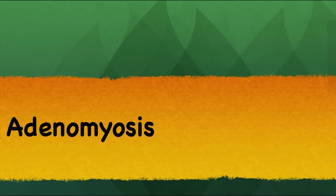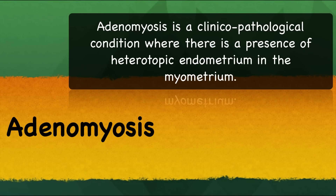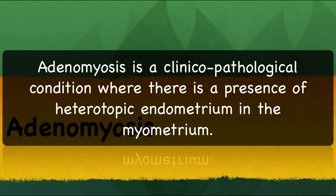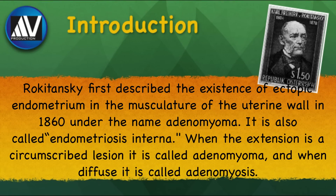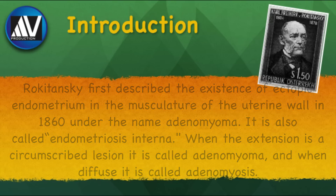In the past, adenomyosis was considered only a pathological condition. However, in modern gynecology, due to the availability of newer imaging techniques, it is now considered as a clinical pathological condition where there is presence of heterotopic endometrium in the myometrium. Rokitansky first described the existence of ectopic endometrium in the musculature of the uterine wall in 1860 under the name adenomyoma. It is also called endometriosis interna.